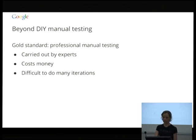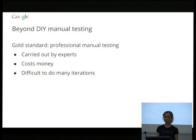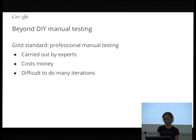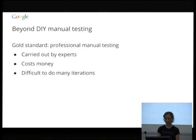The gold standard is professional manual testing. There are companies with experts that will actually perform all this manual accessibility testing for you — they know exactly what they're looking for and provide a report with where your compliance is at. Unfortunately, firstly it costs money. But the real downside is that it's difficult to do many iterations — it takes them time to go through and thoroughly test everything. If you have some showstopper bug on the first screen and they physically can't get beyond it, you've got to wait for the report, fix it, and send it back again.